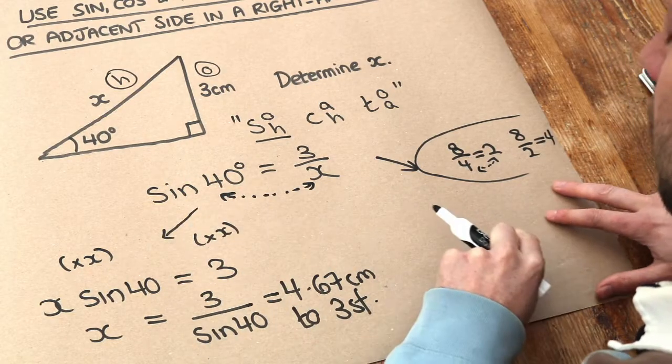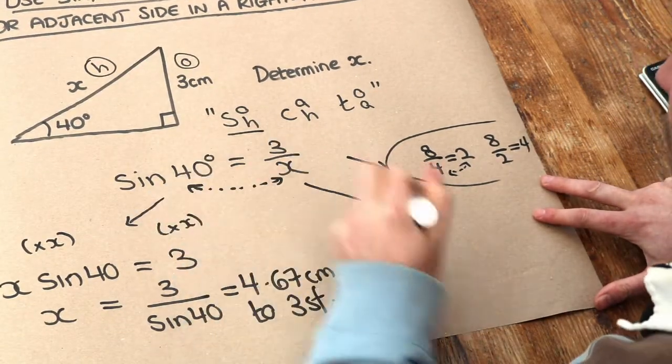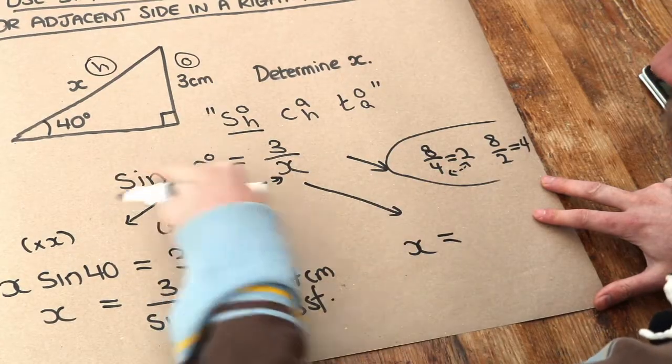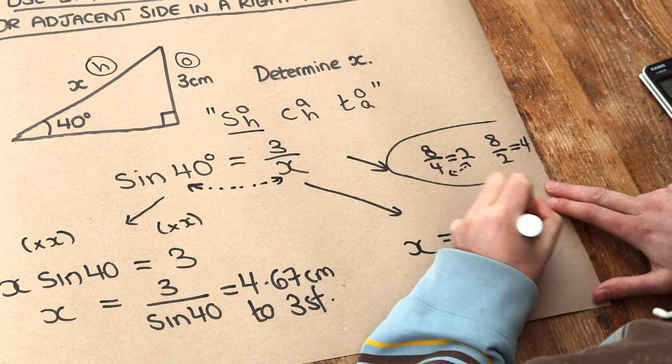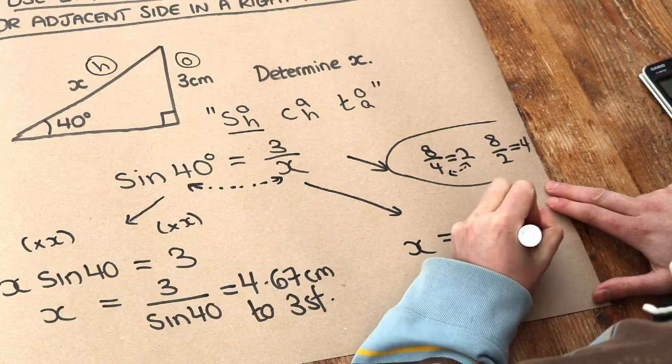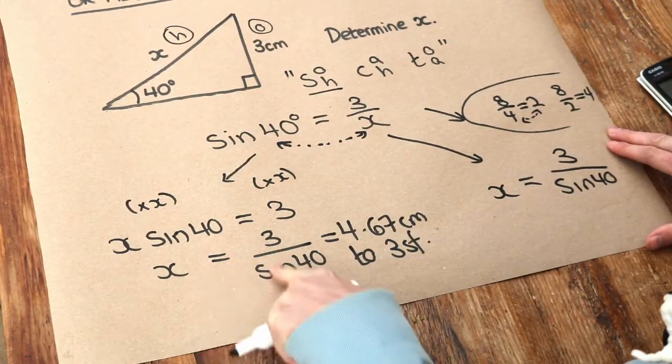This is all one thing, sine of 40. So if we do that, the x goes over here, and the sine of 40 gets swapped to where the x was, so we get 3 over sine of 40. And you can see we immediately get to this point here.